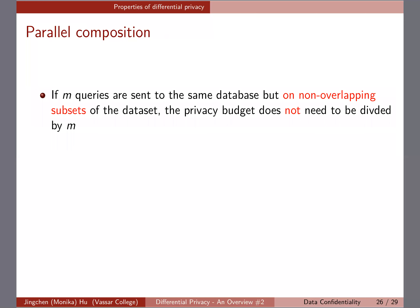However, not every time do you have to divide the privacy budget. There is another composition called parallel composition. If M queries are sent to the same database but each query is about a non-overlapping subset of the dataset, the privacy budget does not need to be divided by M. Each query talks about a separate, non-overlapping subset of the data.